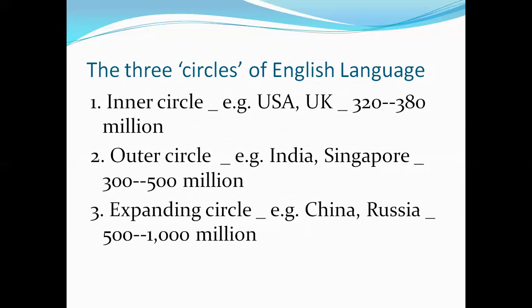In the outer circle, countries such as India and Singapore represent 300 to 500 million speakers. And the expanding circle, including China and Russia, represents 500 to 1,000 million. This means that the people using English language in the third circle are nearly three times the number of people living in countries where English is used as the first language.